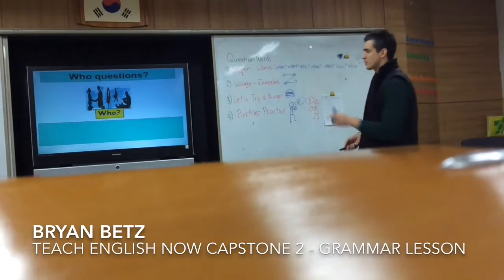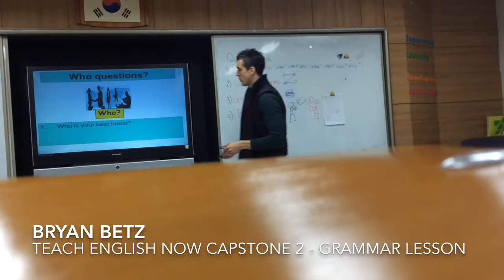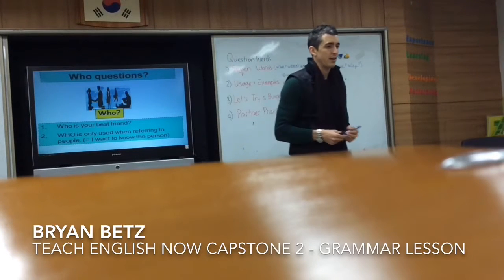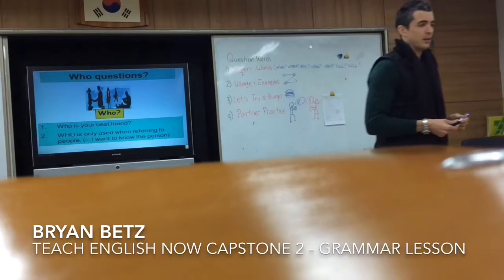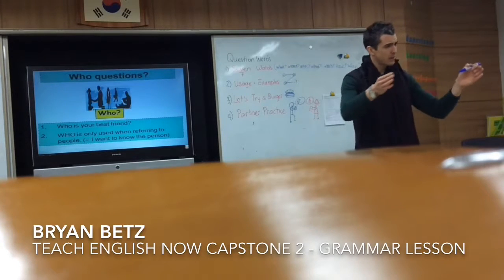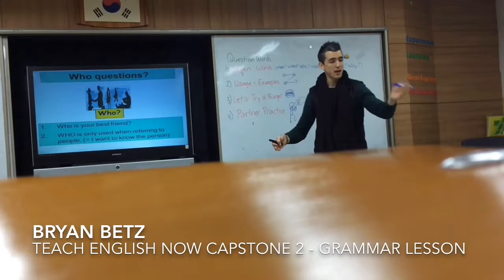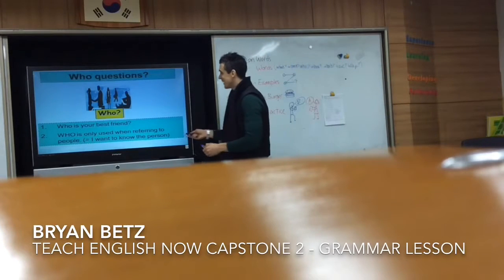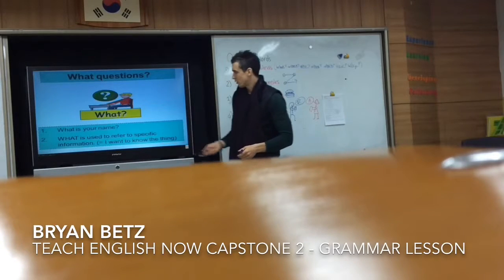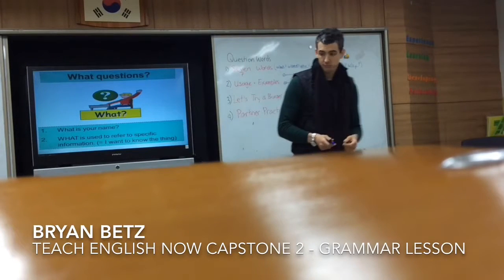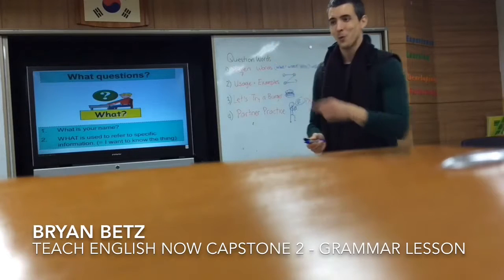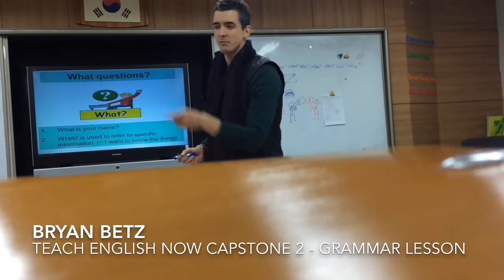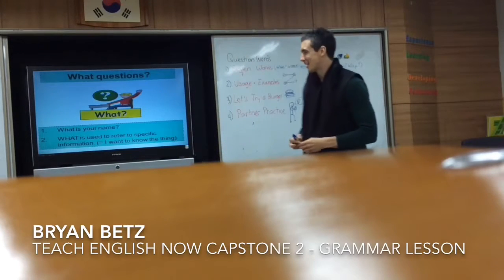Now we'll look at some real examples together. 'Who' — number one: Who is your best friend? We want to answer in a complete sentence: 'My best friend is Tessa.' Very good. Next is a 'what' question: What's your name? My name is Alex. That's much better.